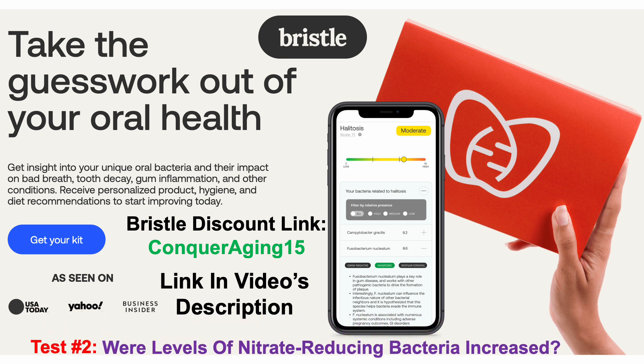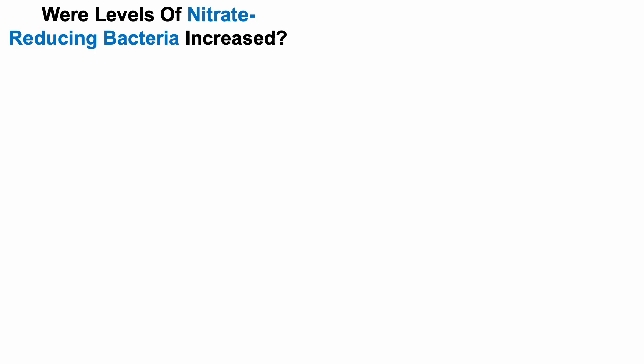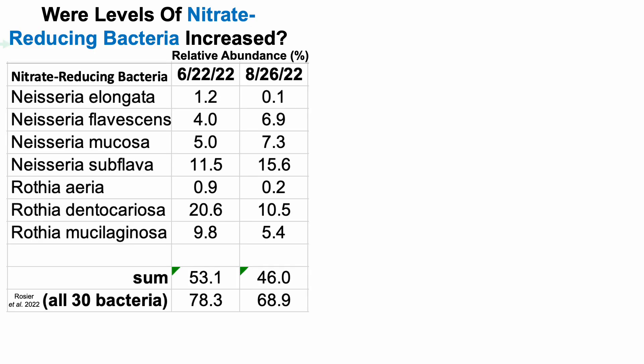For test number two, the first question is: were levels of nitrate-reducing bacteria increased? We've got seven bacterial species shown to have nitrate-reducing ability. For the first test, the relative abundance — the sum of all these bacteria — was 53.1% of all my bacteria. But that's not what happened: it actually went down to 46%. These aren't the only species related to nitrate reduction; there are up to 30 or more bacteria, referenced in the Rossier 2020 paper linked in the description.